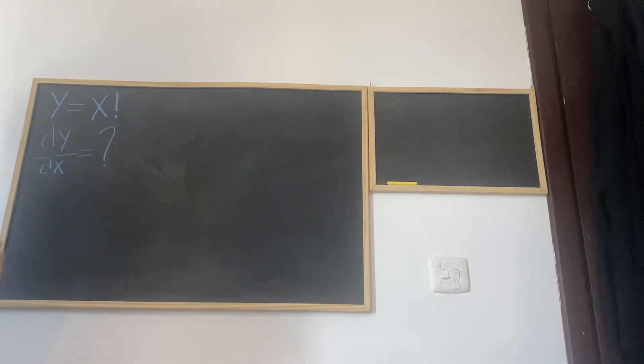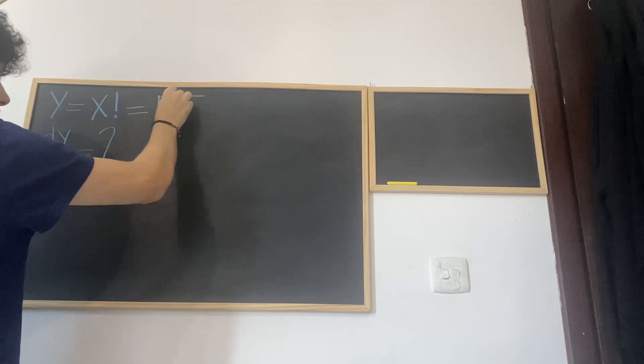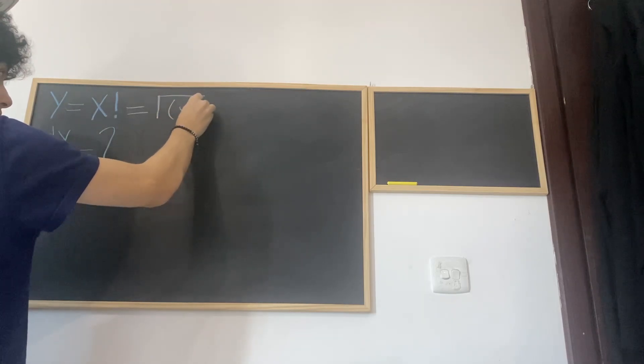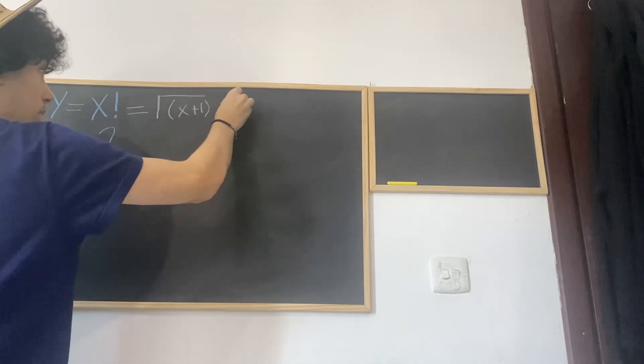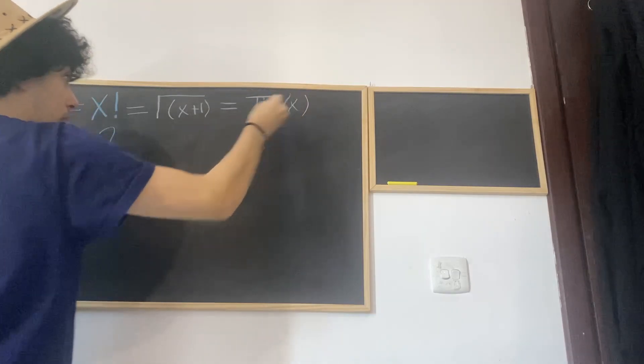I have mentioned one of them before in one of my videos, but I haven't mentioned the second at all. So x factorial is equal to the gamma function of (x+1), which is also equal to the pi function of x.